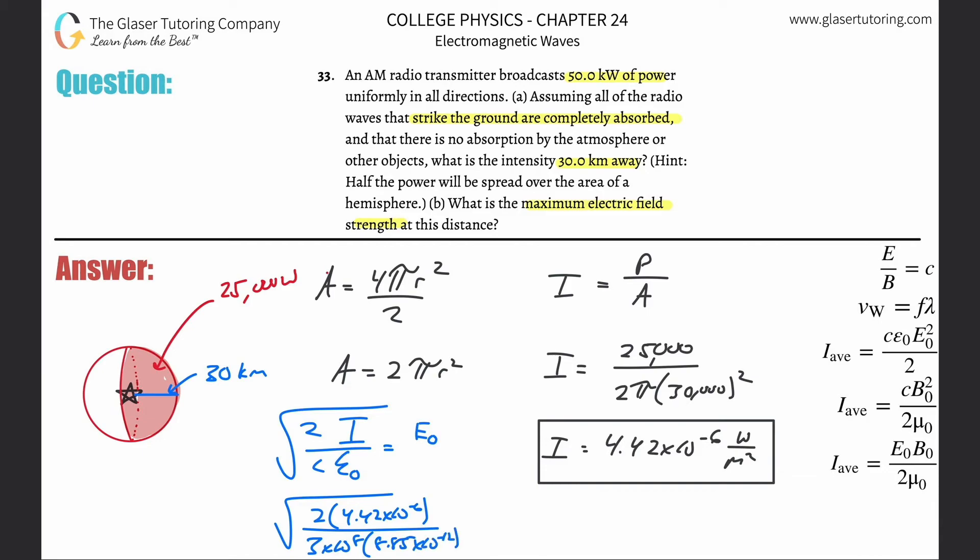Go plug and chug. Square root of 2 times 4.42 - actually let me put in that exact answer. Second, square root of 2 times that exact answer, then divide it by (3 times 10 to the 8 multiplied by 8.85 times 10 to the minus 12). What do we get? We get a value here of about 0.0577.